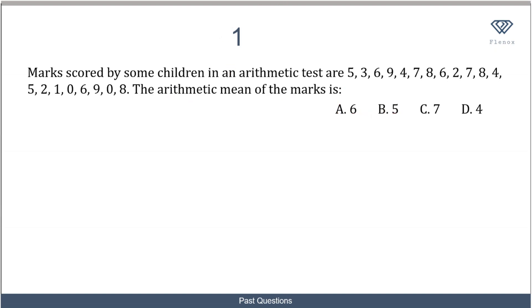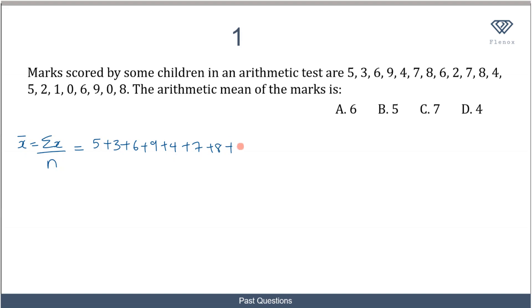We are told to find the arithmetic mean. The formula for finding the arithmetic mean is the summation of the numbers over the total number of numbers. So we have to add all these numbers: 5 plus 3 plus 6 plus 9 plus 4 plus 7 plus 8 plus 6 plus 2 plus 7 plus 8 plus 4 plus 5 plus 2 plus 1 plus 0 plus 6 plus 9 plus 0 plus 8.